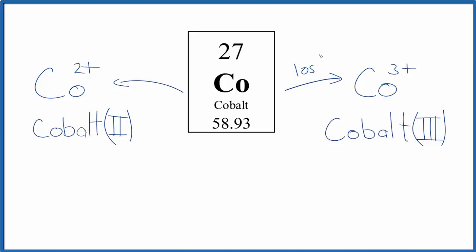For the cobalt-3 ion, we've lost three electrons. Electrons are negative, so if you lose three negative charges, you get a 3+. The cobalt-2 lost two electrons, so we have a 2+ ionic charge.